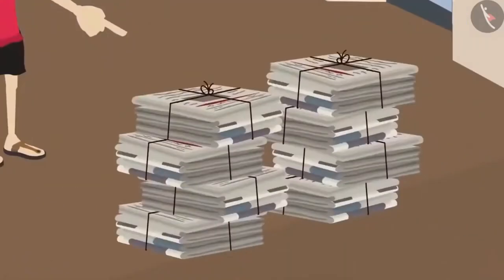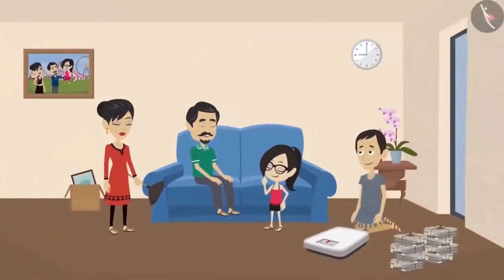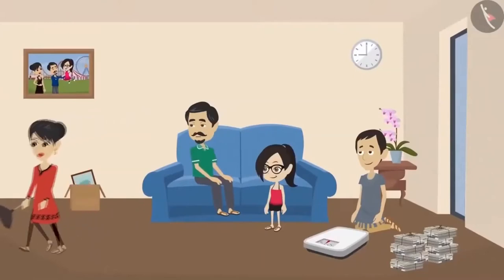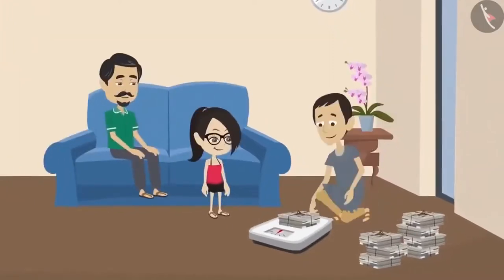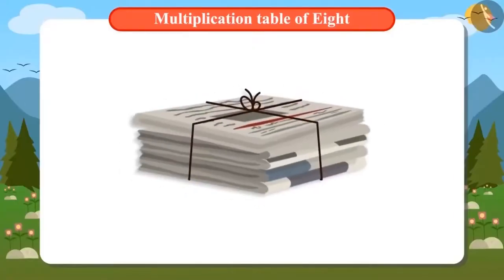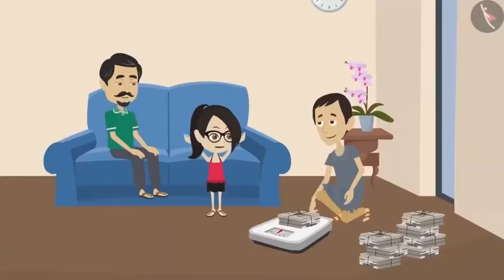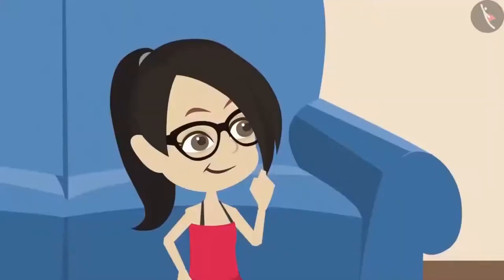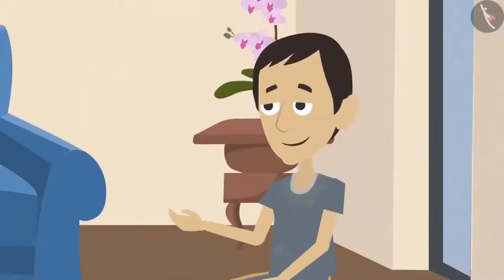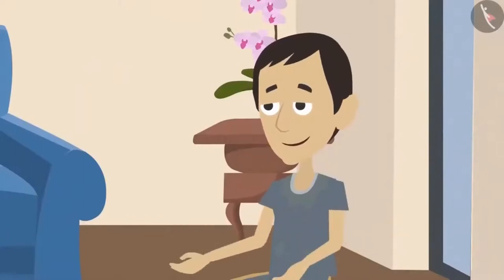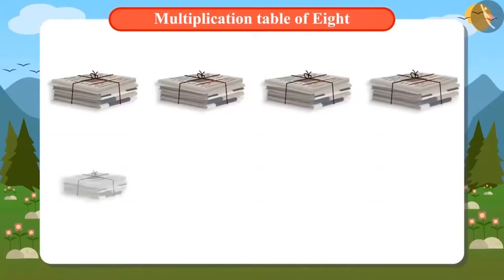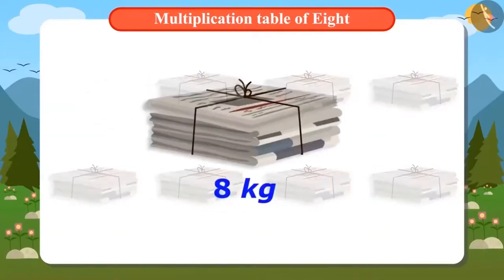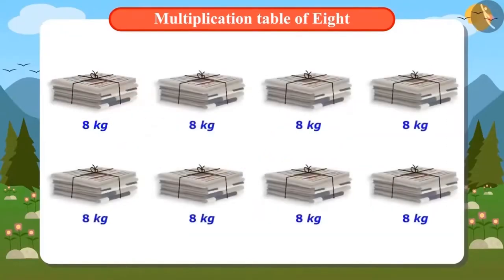Vandana rushes off and brings the scrap dealer to her house. We want to sell all these newspapers. The scrap dealer puts one bundle of newspaper on the weighing scale. One bundle of newspaper weighs 8 kilograms. Each bundle would weigh the same 8 kilos. There are 8 bundles of newspapers in total. If one bundle is of 8 kilos, can you tell us how many kilos of newspapers are there?